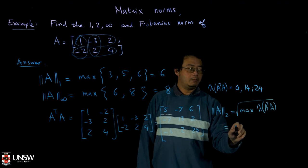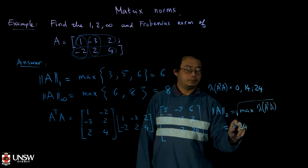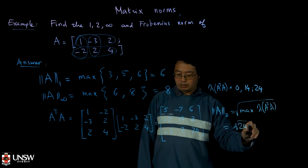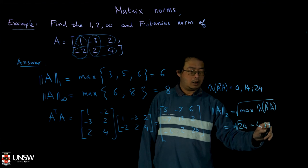So it will be square root of 24, and it will be 4.899.